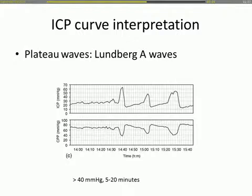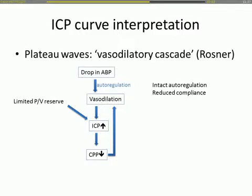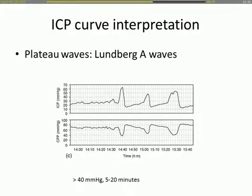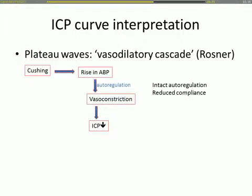Plateau waves, also known as Lundberg A waves, are high-amplitude episodes above 40 mmHg. They are usually self-limiting or can be stopped by hyperventilating the patient, lasting 5 to 20 minutes, and are not necessarily associated with bad outcome — because they occur when auto-regulation is intact. It's a vicious circle: a drop in blood pressure causes vasodilation, a rise in cerebral blood volume, a rise in ICP, further decrease in CPP, and further vasodilation up to maximum vasodilation. A Cushing reflex or interventions like mannitol or hyperventilation can reverse this cascade.